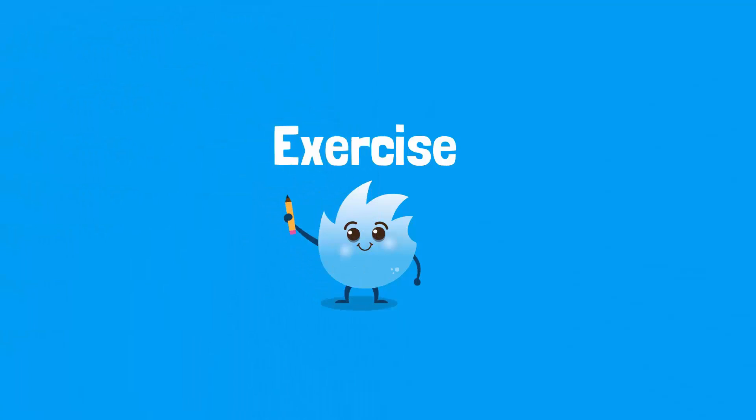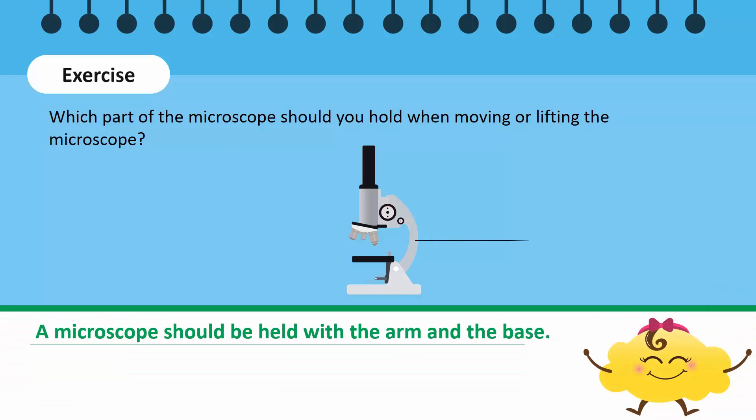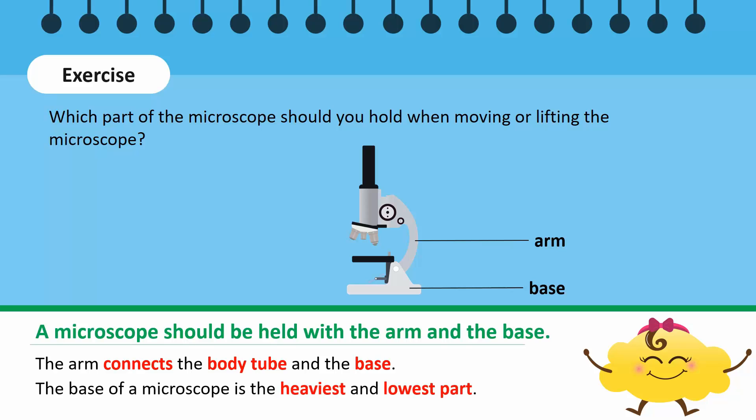Time for an exercise! Which part of the microscope should you hold when moving or lifting the microscope? A microscope should be held with the arm and the base. The arm connects the body tube and the base. The base of a microscope is the heaviest and lowest part, which rests on the table. These parts are designed to hold the microscope and are stronger than the rest of the parts of a microscope.